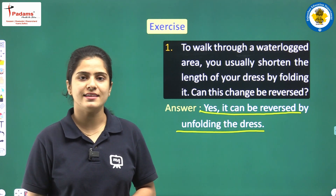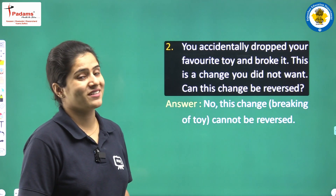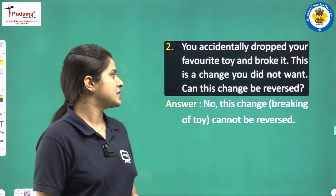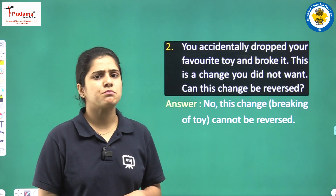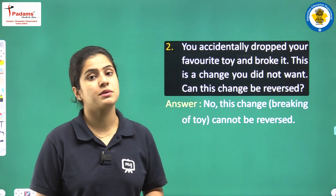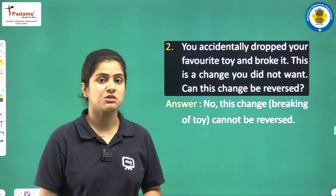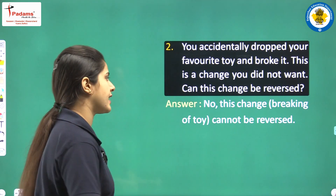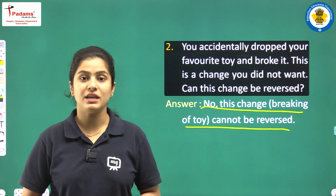The next question: you accidentally dropped your favourite toy and broke it. Nobody wants their toys to be broken. Can this change be reversed? If you have already broken your toy, is it possible for it to be as it was before? No, this change will not be reversed because the toy is broken. Kyonki wo khilona toot chuka hai, isliye hum us ko dobara usi position pe nahi le ja sakte. This change is an irreversible change — the breaking of the toy cannot be reversed.